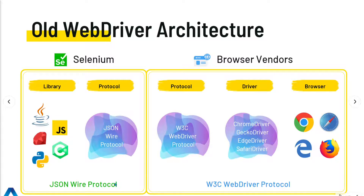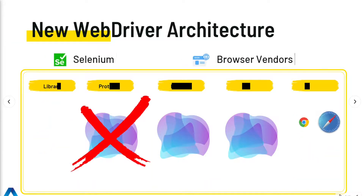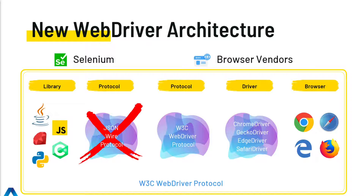The main function of the JSON Wire protocol is to encode and decode information. Now let's take a look at what the new WebDriver architecture looks like. The first thing we notice is a big red X, which means we no longer have the JSON Wire protocol with Selenium 4 - it is completely being ripped out of WebDriver. What this means is that Selenium and the browser vendors are now using the same protocol: the W3C WebDriver protocol. The differences lie at the protocol level, not at the API level.